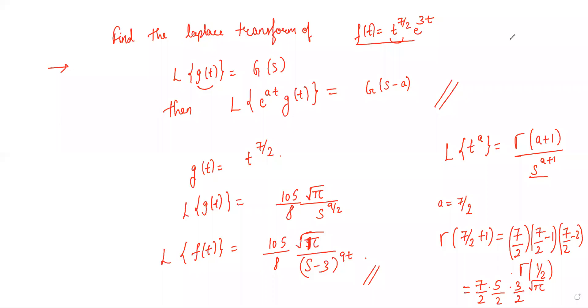There is a small correction. Gamma of 1/2 is root pi, not root 5, so this will be basically 105 by 16. Sorry for that. This is the answer.